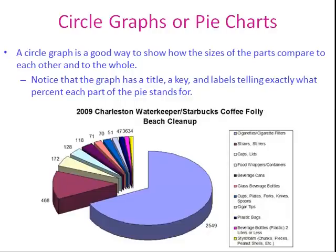A circle graph is a good way to show how the sizes of the parts compare to each other and to the whole. Notice that the graph has a title, a key, and labels telling exactly what percent each part of the pie stands for.